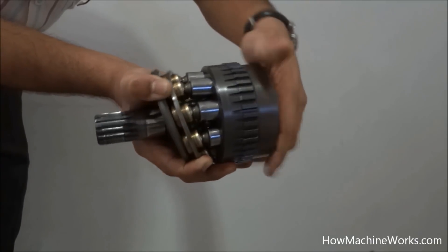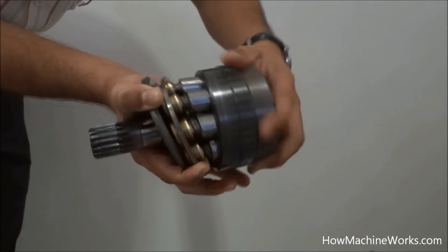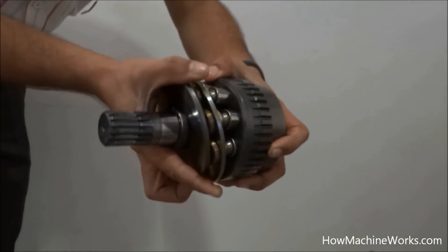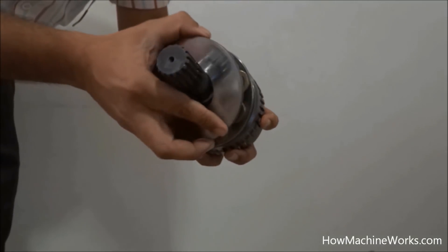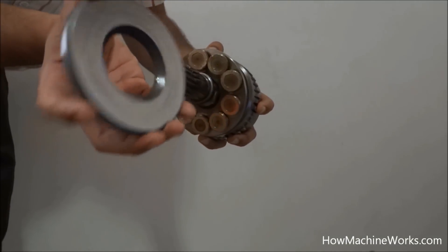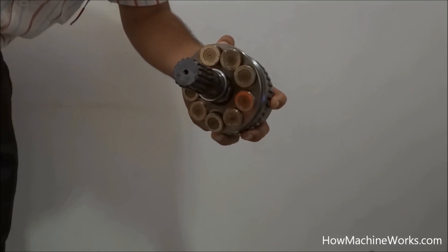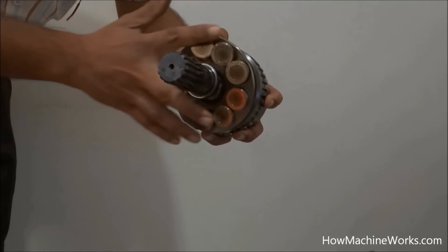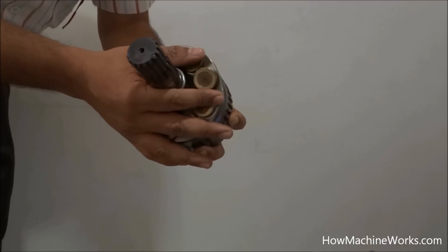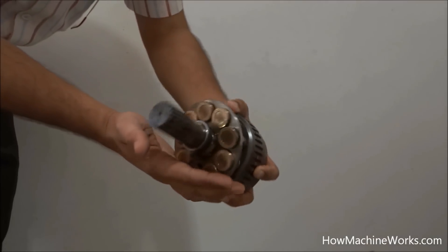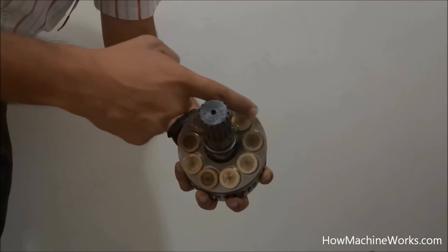And inside we have these pistons which actually move. So when the swash plate is vertical, there is no flow. And as the swash plate angle changes, the flow varies depending upon the angle of the swash plate. And the swash plate angle is controlled by a valve according to the load and the requirement.